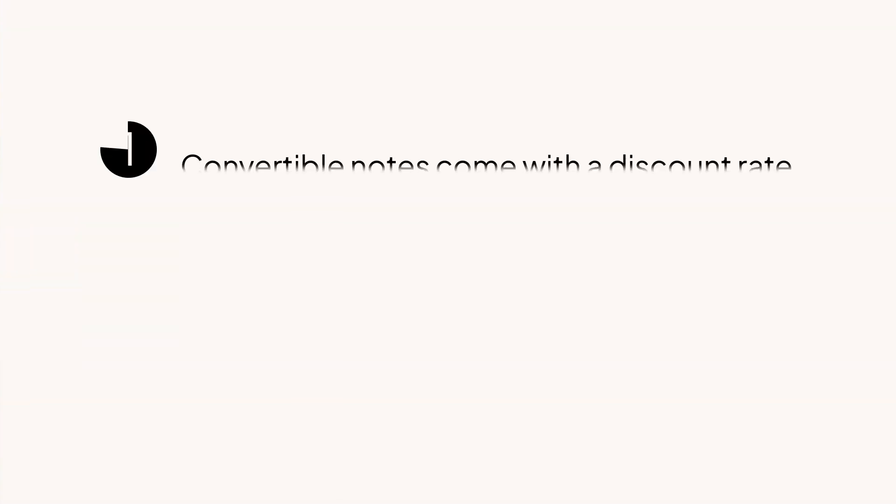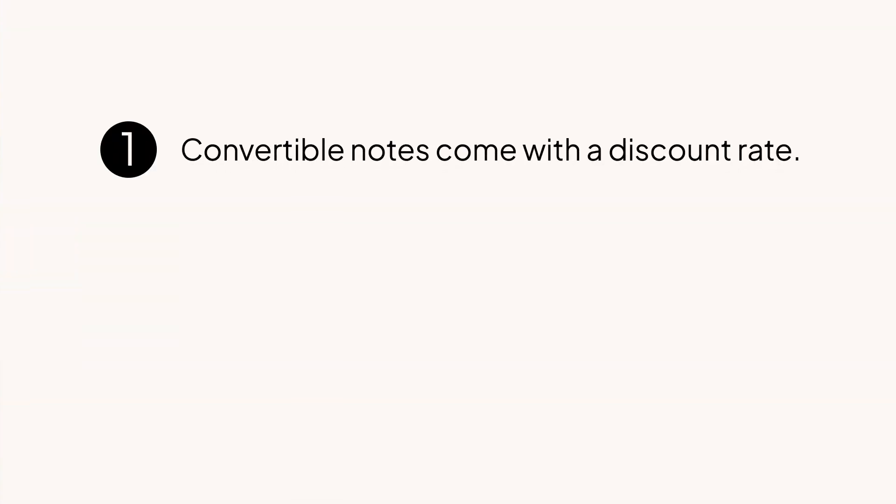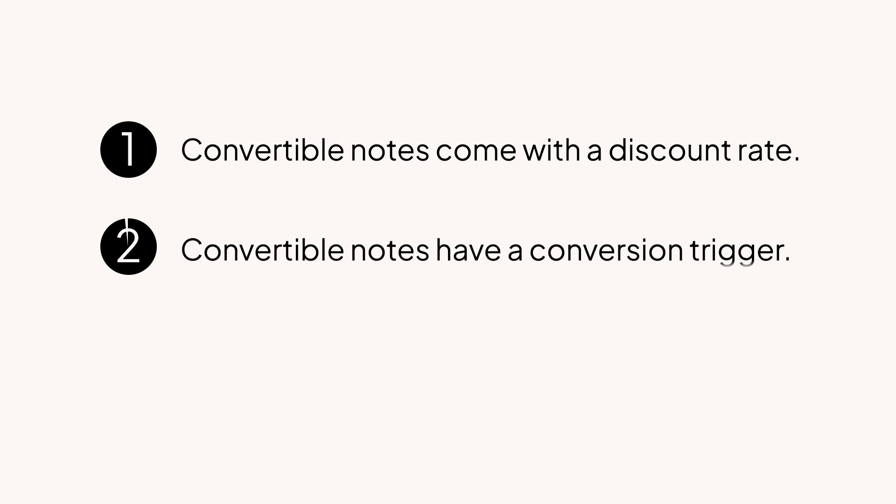Let's run through the main components of convertible notes. Number one, they come with a discount rate, meaning when you finally give your investors their shares, you'll do so at a cheaper price than you give your other investors. Think of this discount as a reward for backing the company so early on. Number two, convertible notes have a conversion trigger — this outlines the thing that has to happen for you to convert your investors' money into shares. A maturity date is a conversion trigger. Another example would be a trigger that says you'll convert their shares once you've raised $5 million.